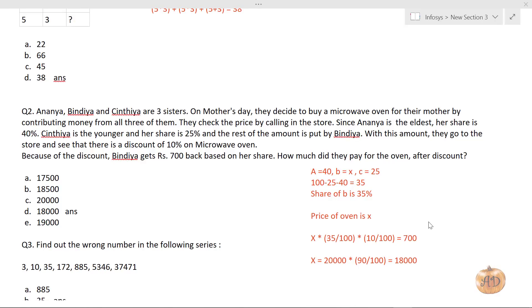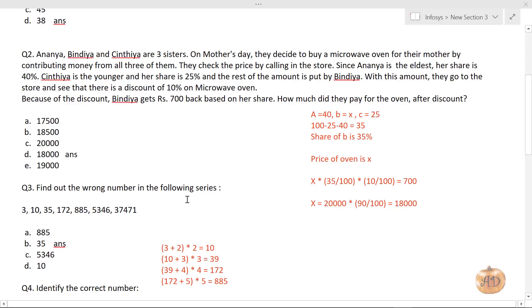Let's move to the next question. To make calculation easier, I've already written the formula. In this series, you have to find the wrong element. The formula is: first element plus 2 times 2, second element plus 3 times 3, next element plus 4 times 4. So 3 + 2 × 2 = 10, correct. But 10 + 3 × 3 = 39. So this should have been 39, but it's given as 35. So 35 is the wrong number in the series.